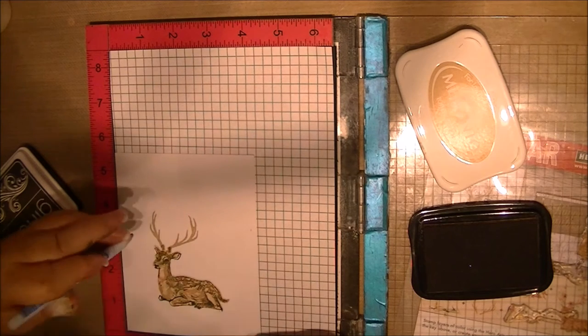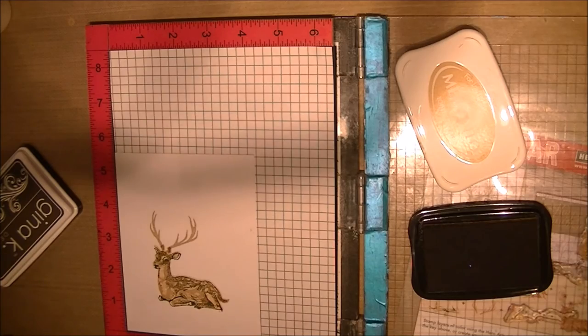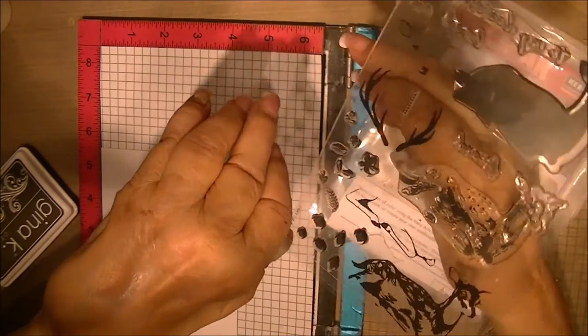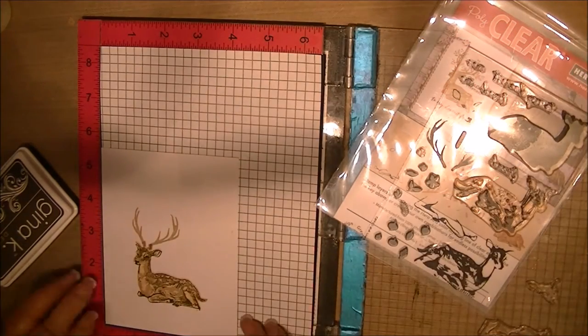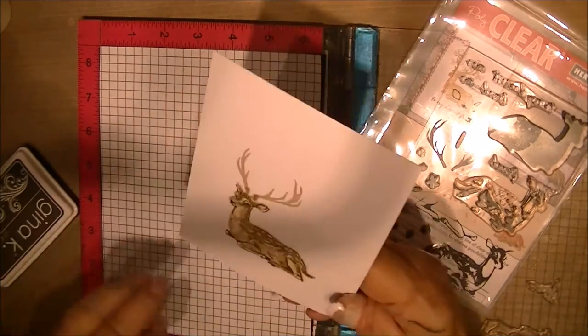Remember all those little pieces in this stamp set? It's got some holly and some leaves. I'm going to end up using a couple of those to disguise it.